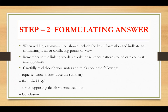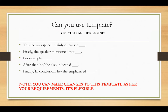When writing a summary, you should include all of the key information, and if there is any contrasting detail or conflicting point of view, then you have to mention it. Use linking words, adverbs, or sentence patterns indicating contrast or opposite points. Start your summary with a topic sentence that introduces the main idea, followed by two to three sentences consisting of supporting points or examples. You can use templates to formulate your answer — the template is flexible and you can make changes as per your requirement.